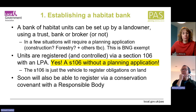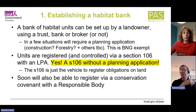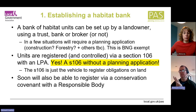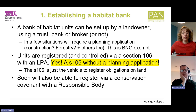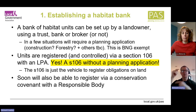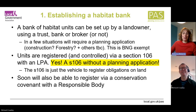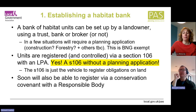A Habitat Bank is a bank of habitat units. They can already have been made — you could have started a year ago, improved habitats, taken poor farmland, made it better, banked them, and kept them for when someone is prepared to buy them. It doesn't have to be contemporaneous with the planning application. In a very few situations, establishing the bank itself might require a planning application — if it involves constructing wetlands or forestry — but where it does, it is BNG exempt.